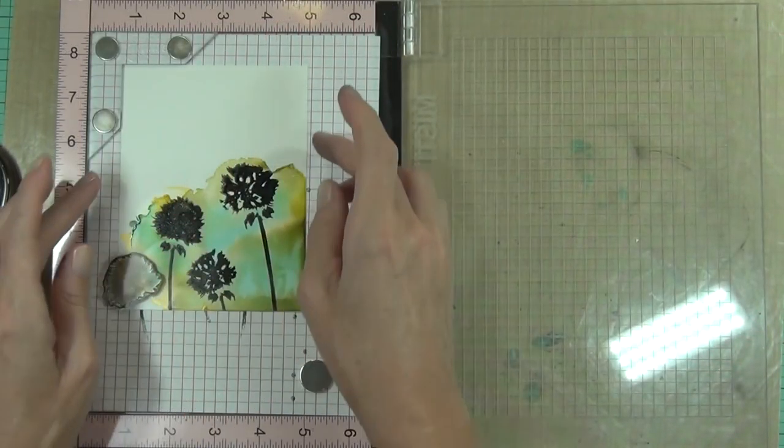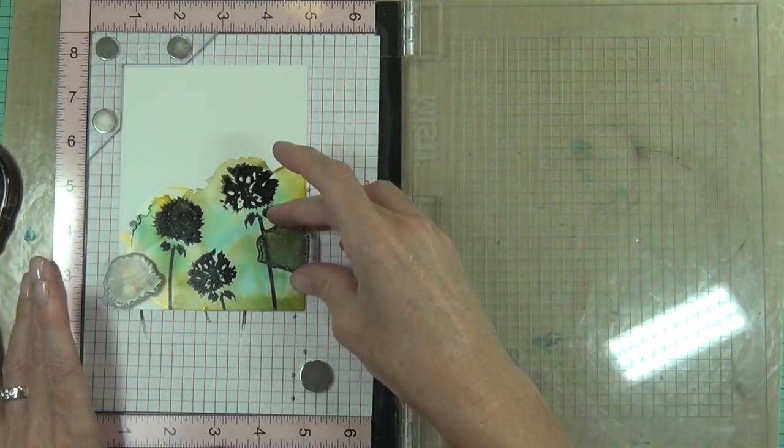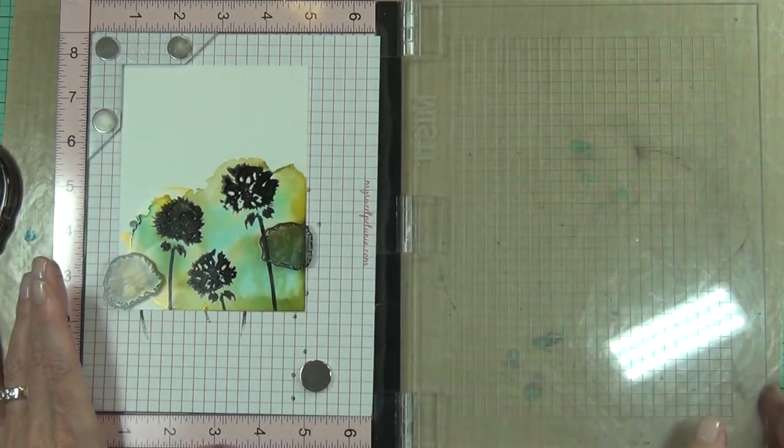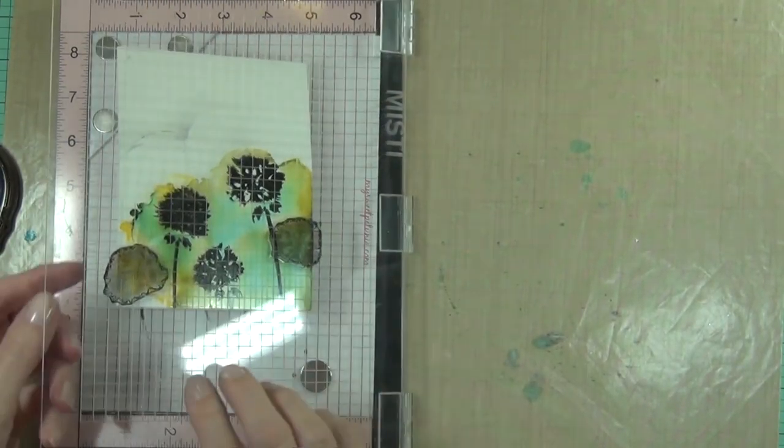Just on different angles over the area that I've created, using my MISTI because I knew I would probably need to stamp them a couple of times. And one thing I did find was that the images kind of stuck to the Yupo paper when I added it directly on.